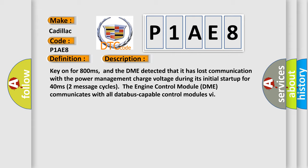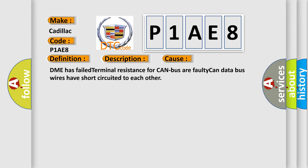The engine control module DME communicates with all data bus-capable control modules. This diagnostic error occurs most often in these cases: DME has failed terminal resistance for CAN bus or faulty CAN data bus wires have short-circuited to each other.